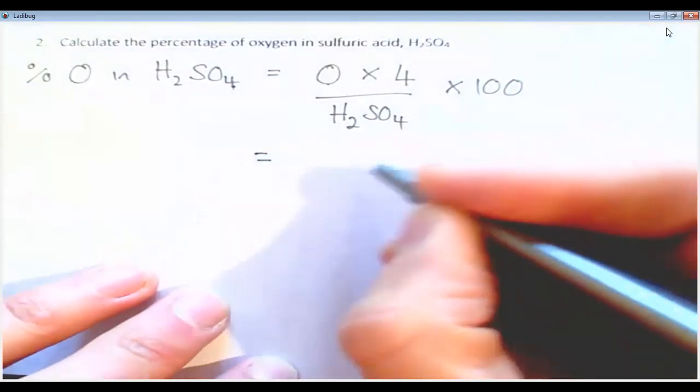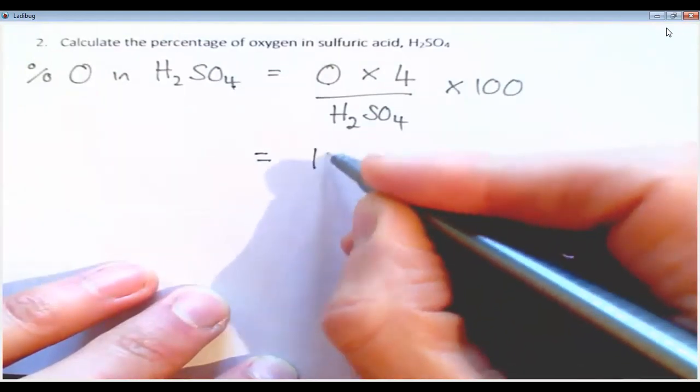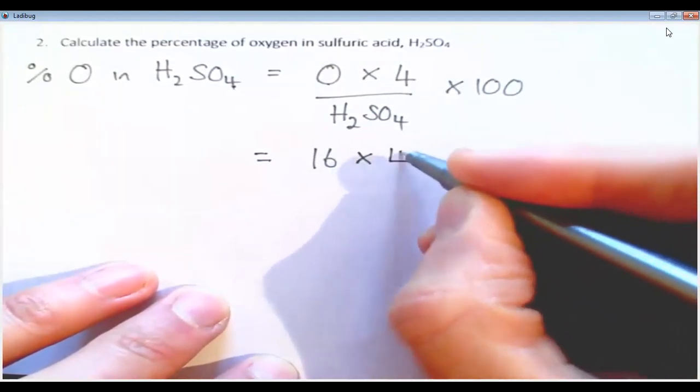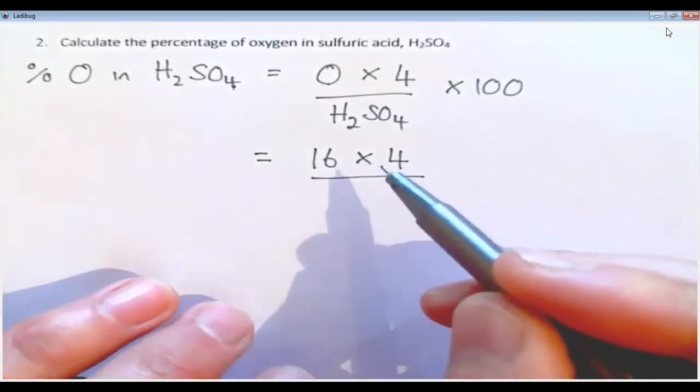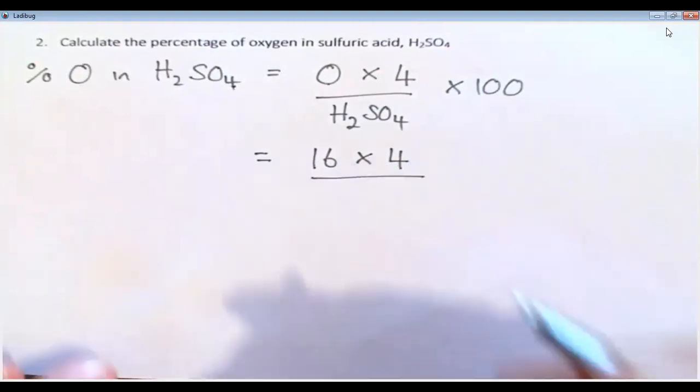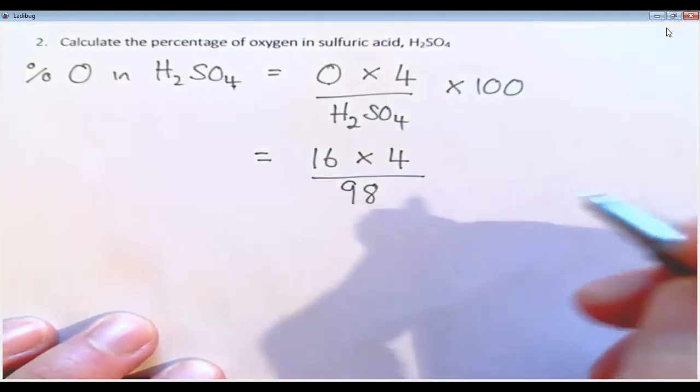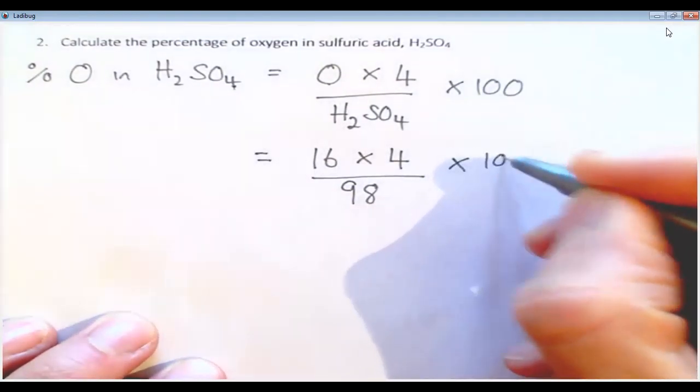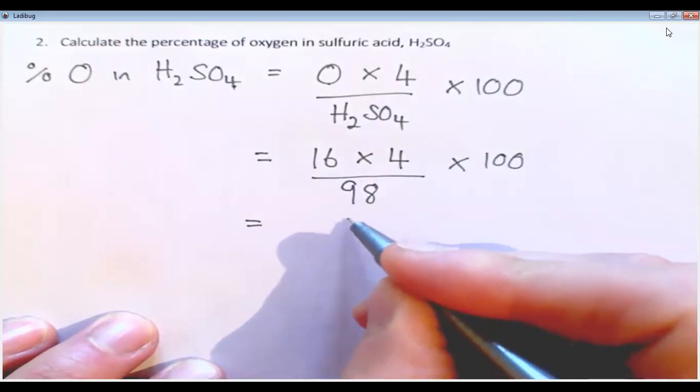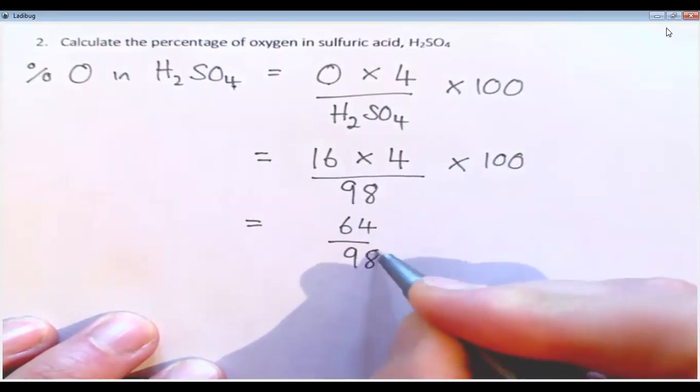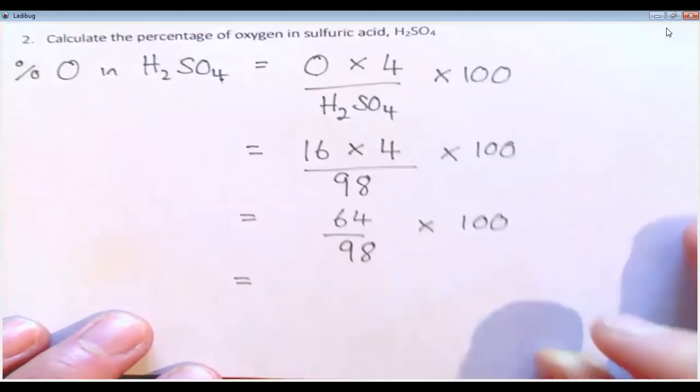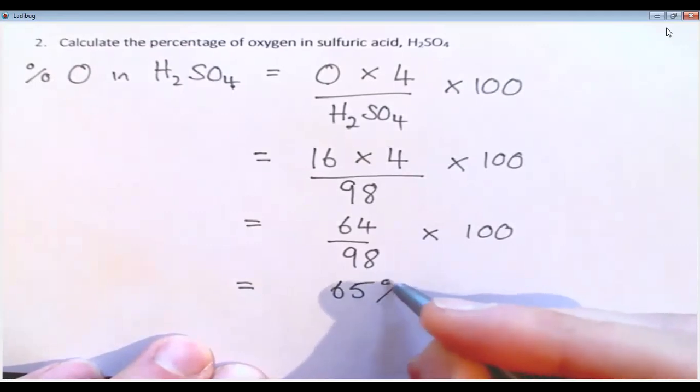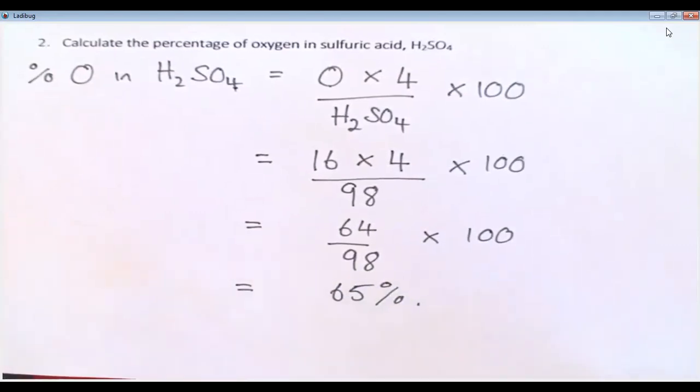the mass of H2SO4 times 100. So that's going to equal the mass of oxygen is 16. 16 times 4, divided by—again you're going to have to use your calculator to work this out—H2SO4, that comes to 98, times 100. That takes us down to 64 divided by 98 times 100, so that equals 65%. Okay, so there are two worked examples for you.